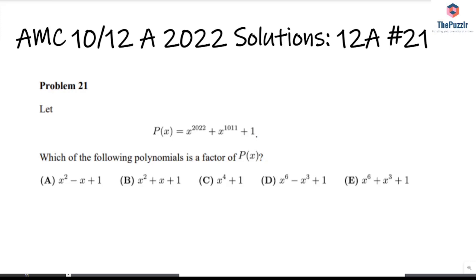Here we have problem number 21 from the AMC 12A. We're given P(x) which is equal to x to the power of 2022 plus x to the power of 1011 plus 1. Each of the following polynomials is a factor of P(x).